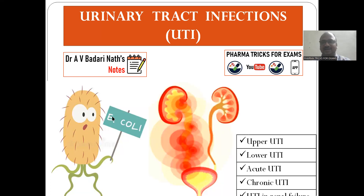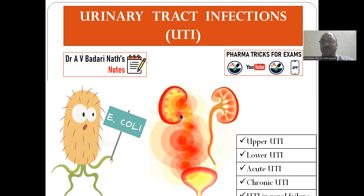If you see this side, the urinary tract is completely infected — this area, this area, this area — total from top to bottom. You can see various forms. Upper UTI means only this part — the tubules, nephron and all. If there is an infection to this area, you can say it is upper UTI.